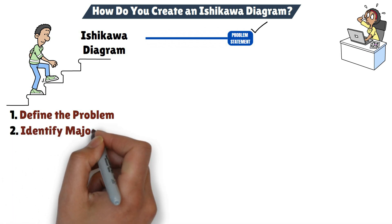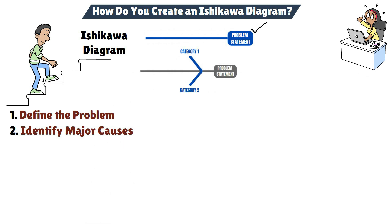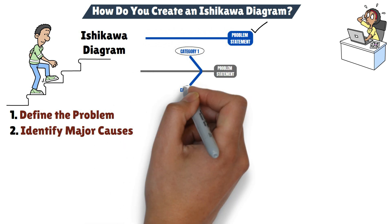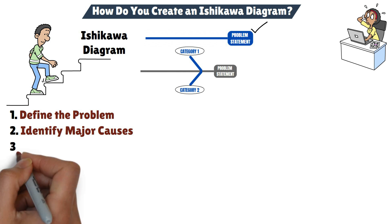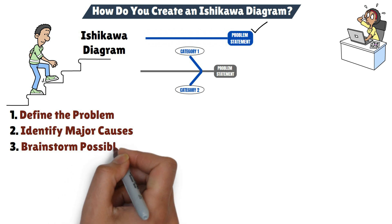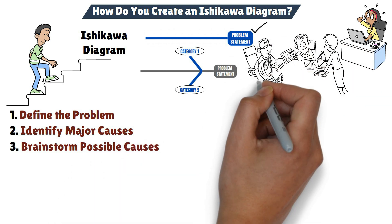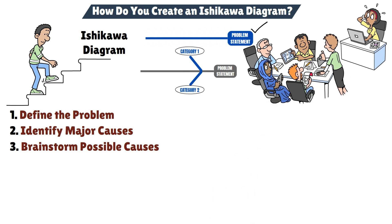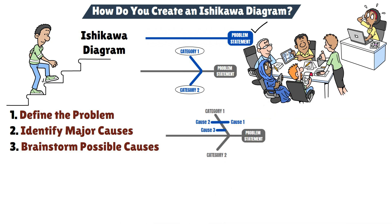Step 2: Identify major causes. Next, identify the main categories of causes — these will be the larger branches coming off the spine of the diagram. Use categories relevant to your project to ensure you cover all potential areas. Step 3: Brainstorm possible causes. With your categories in place, it's time to brainstorm possible causes for each category. Ask yourself and your team what could be contributing to this problem in this area. These causes will be represented as smaller branches off the main categories.